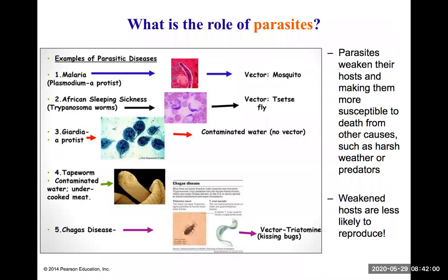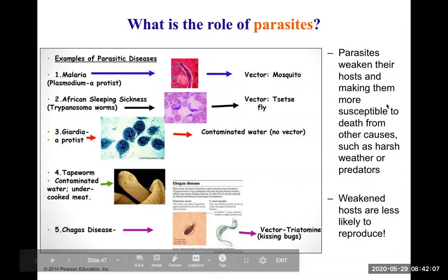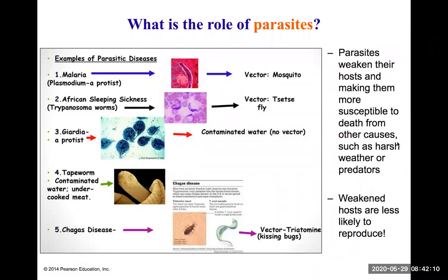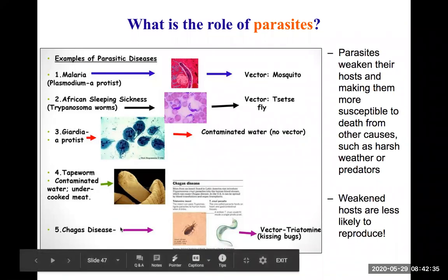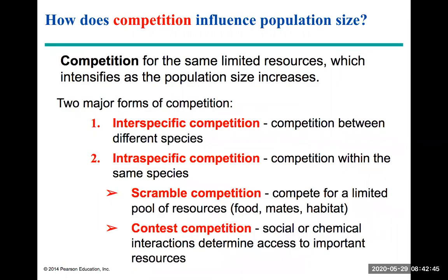Parasites can also have similar density-dependent effects. They weaken their hosts, making them more susceptible to disease and harsh weather, and they also reduce the host's reproductive capability. Examples of parasites include those causing malaria, African sleeping sickness, giardia, tapeworm, and Chagas' disease. All of these can weaken or slow down population growth over time.